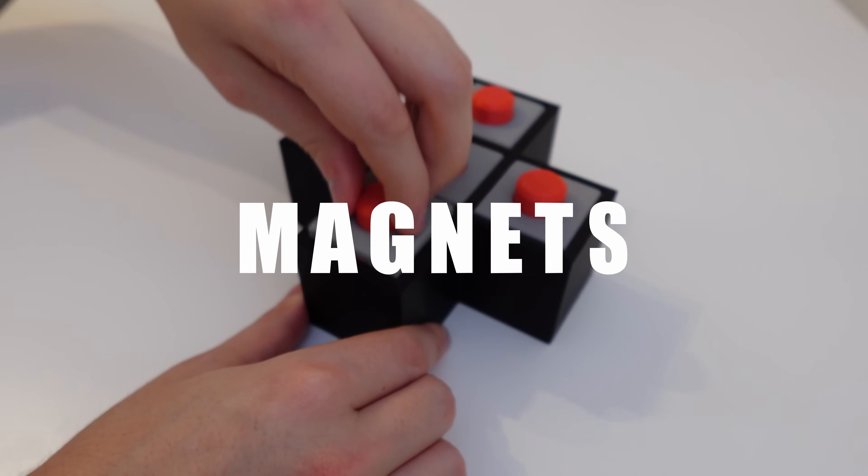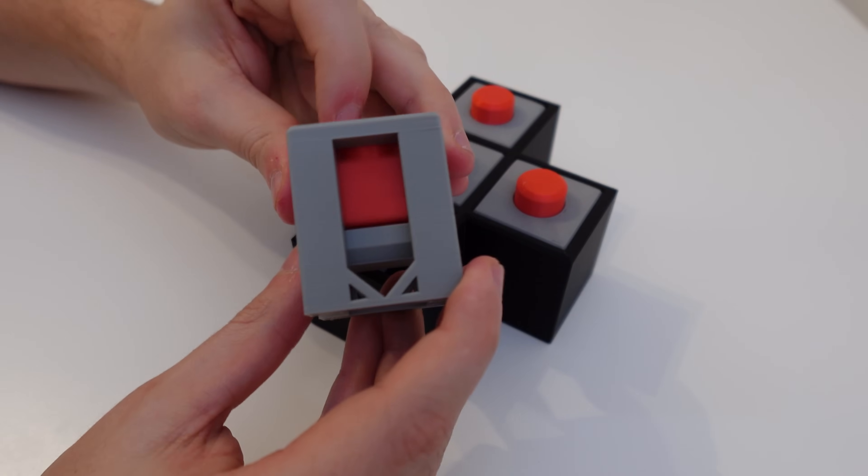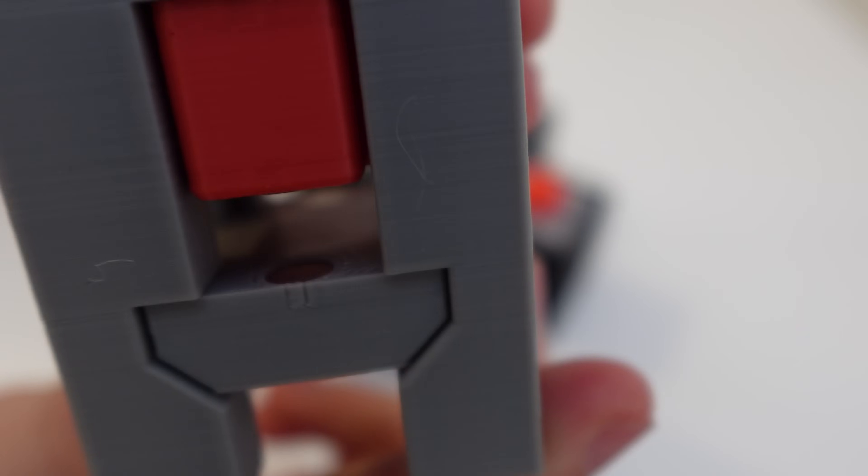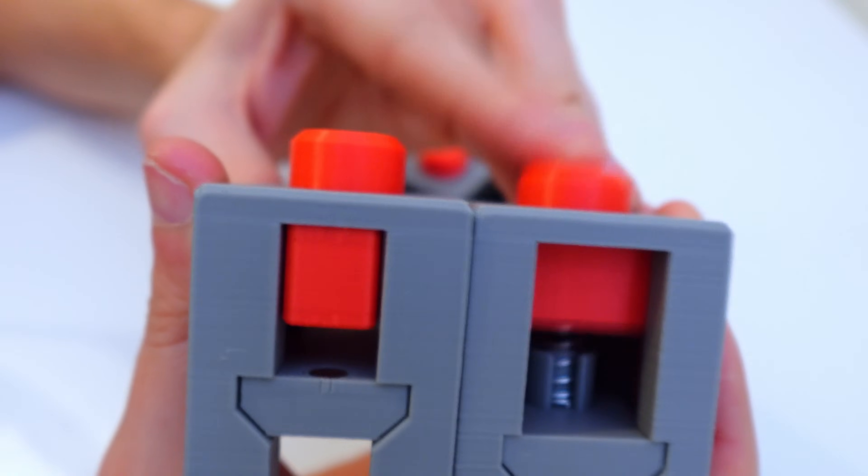The third method is magnets. Magnets are both reliable and super flexible in terms of placement. You can put them under the button, above it or even both. They also give a unique feeling compared to springs or rubber bands.